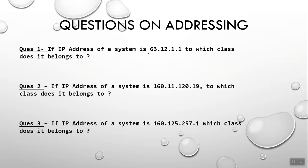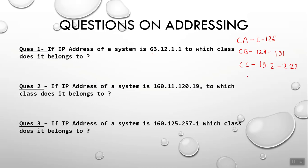The first question is: the IP address of a system is 63.12.1.1. To answer this, you need to know the class ranges. The range of Class A is 1 to 126. The range of Class B is 128 to 191. The range of Class C is 192 to 223. Class D is 224 to 239, and Class E is 240 to 255.